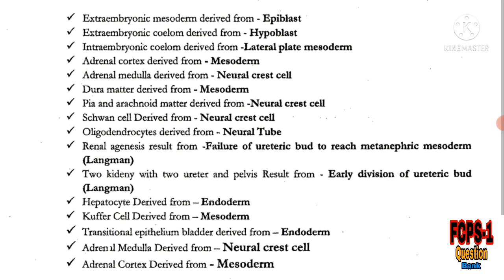Remember, renal agenesis results from failure of the ureteric bud (UB) to reach the metanephric mesoderm (MM). A duplex kidney with two ureters and pelvis results from early division of the ureteric bud.